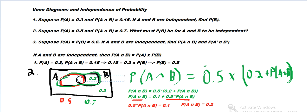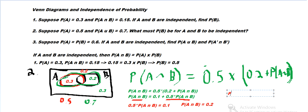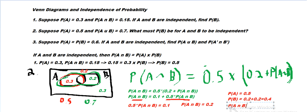So we've got 0.2 in the intersection. A has 0.5 total, so there's 0.3 only in A. We can double-check: P(A) equals 0.5. P(B) equals 0.2 in the intersection plus 0.2 just in B, which is 0.4. And P(A∩B) is 0.2, which equals 0.5 times 0.4. Check.